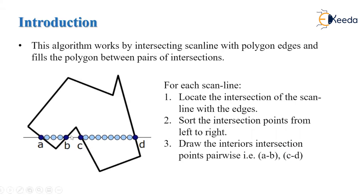The scanline will pass through this polygon and starts filling the polygon with a certain color. The most common example we can consider for this scanline polygon fill algorithm is a Xerox machine. Whenever we place a document on a Xerox machine and a green line passes through that document, the page gets printed.